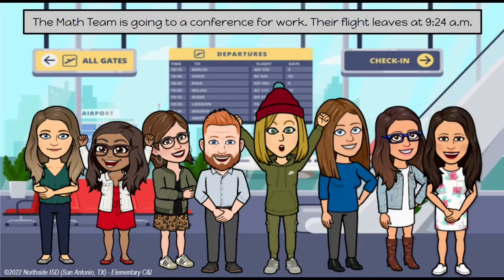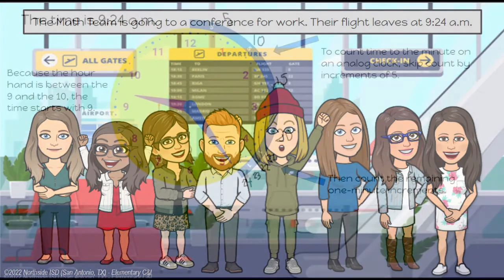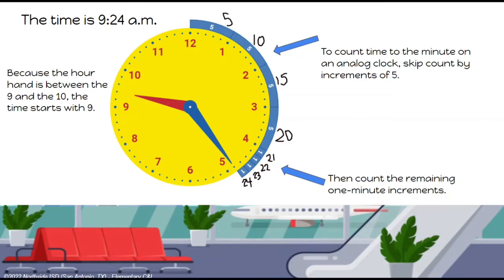In this lesson, students will be introduced to reading and writing time in one-minute increments. Using the scenario from Time Flies, say the math team is going to a conference for work. Their flight leaves at 9:24 AM. Is the math team's flight in the morning or in the afternoon? Using a model of an analog clock, represent 9:24 AM. Tell students that the time is shown to the minute. Ask students: how is the hour read on this clock? The time starts with a 9 because the hour hand is between 9 and 10. Ask students: which strategy has been used to count the minutes in previous lessons? Students have skip counted by 5 to calculate time. Model skip counting by 5, stopping when 9:20 is represented on the clock.